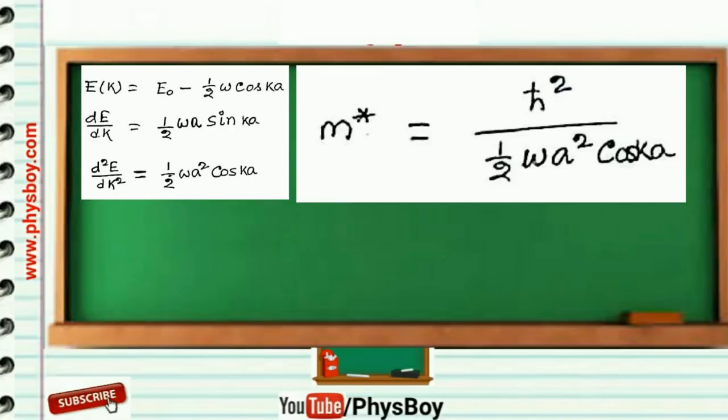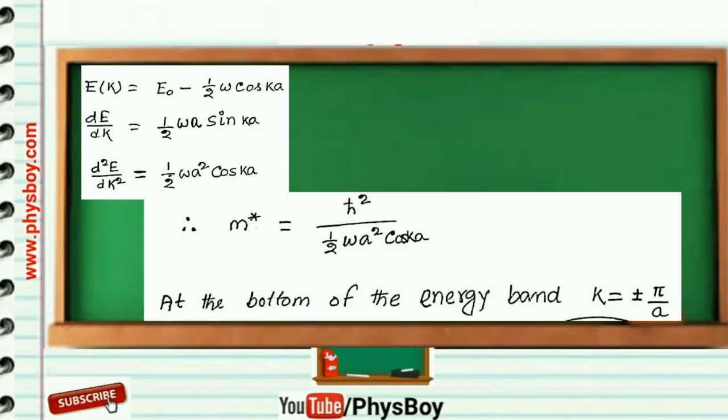You have to find the effective mass at the bottom of the energy band. And you know at the bottom of the energy band, value of K is equal to ±π/a, where a is the lattice constant.